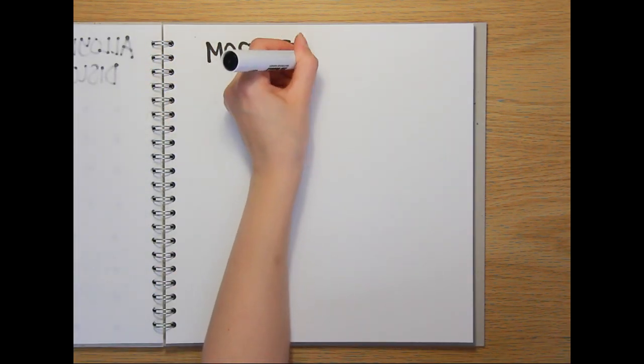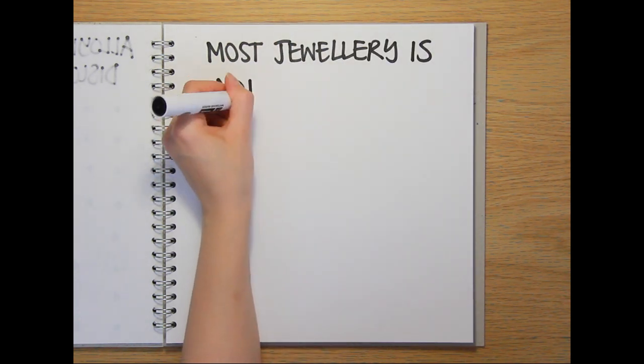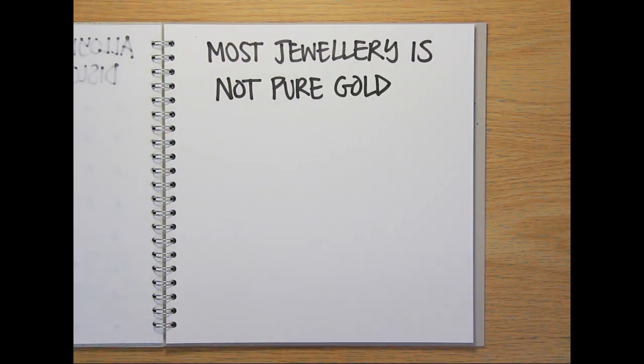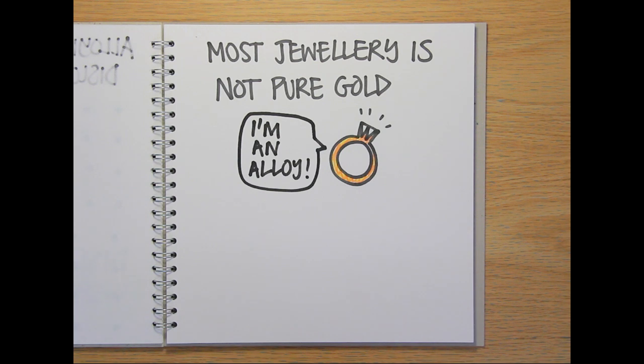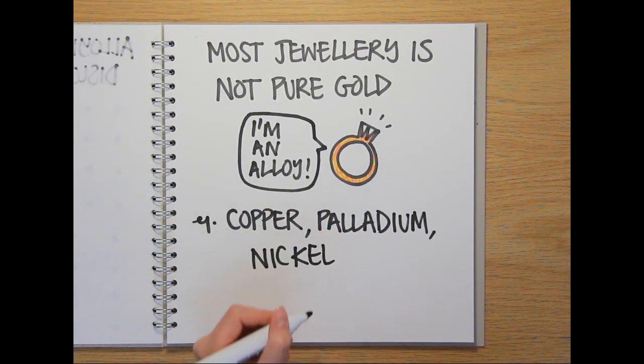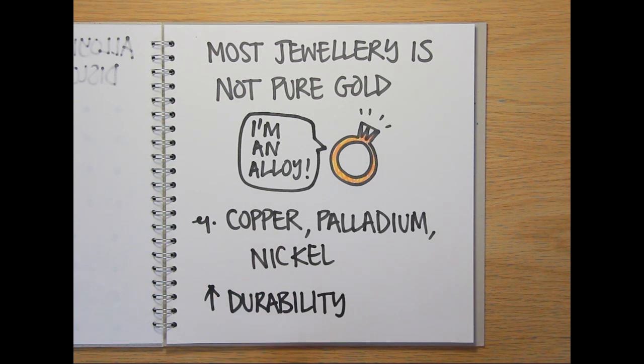This increased hardness is why much of our modern gold jewelry is not pure gold, which would be far too soft, but in fact alloys of gold with metals like copper, palladium or nickel added to increase the strength and durability of the pieces.